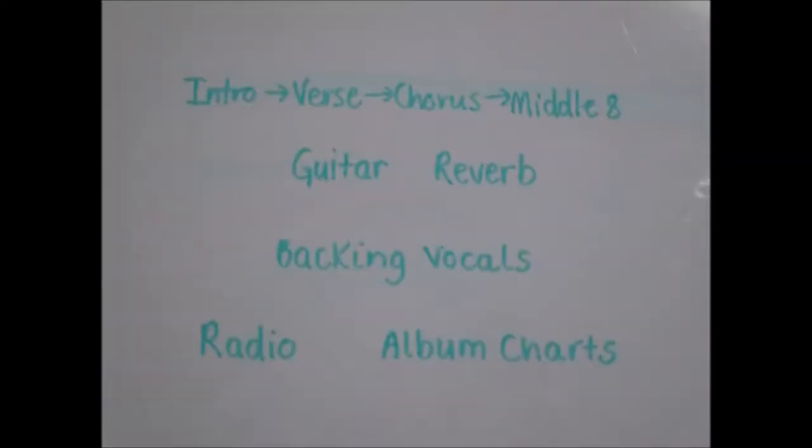Pop songs tend to follow a structure of intro, verse, chorus and middle eight. They're popular for using guitar and reverberation and backing vocals. These are the kind of songs that you'll hear on the radio today or in the album chart. Here are a few examples.